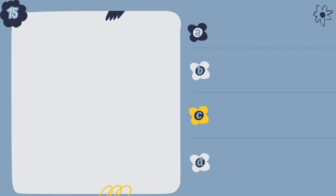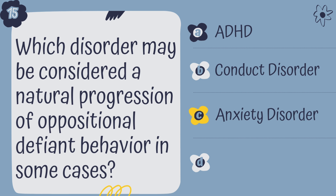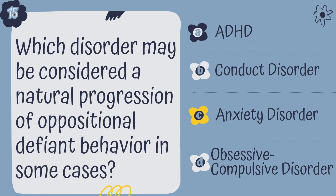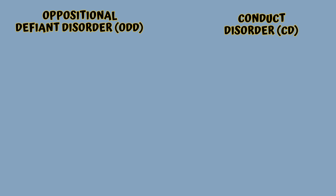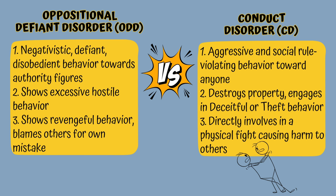Question 15. Which disorder may be considered a natural progression of oppositional defiant behavior in some cases? A. ADHD, B. Conduct disorder, C. Anxiety disorder, or D. Obsessive-compulsive disorder. The correct answer is B, conduct disorder. Oppositional defiant behavior may progress to conduct disorder, which involves a pattern of behavior where the basic rights of others or major age-appropriate societal norms or rules are violated — often seen as a more severe form of disruptive behavior compared to ODD.